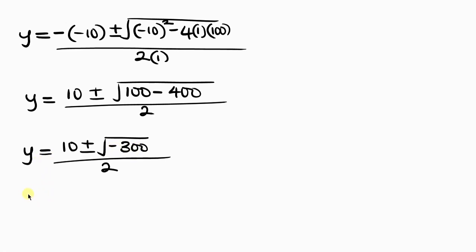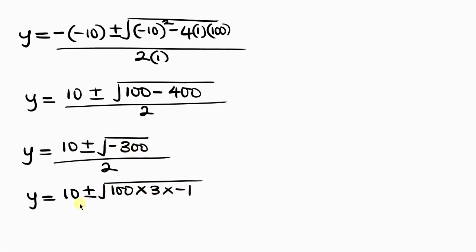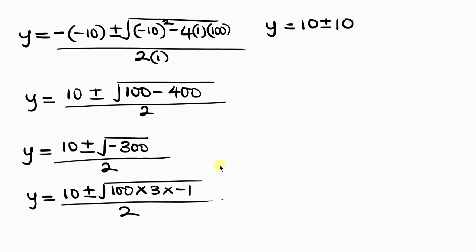So this becomes y equal to 10 plus or minus the square root of negative 300. Now negative 300 is the same as 100 times 3 times negative 1, all over 2. Taking the square roots one after the other: the square root of 100 is 10, the square root of 3 stays inside the radical, and the square root of negative 1 is iota — i — all over 2.